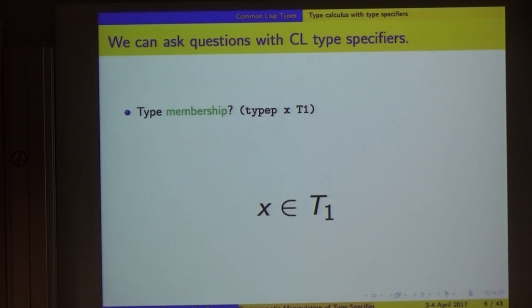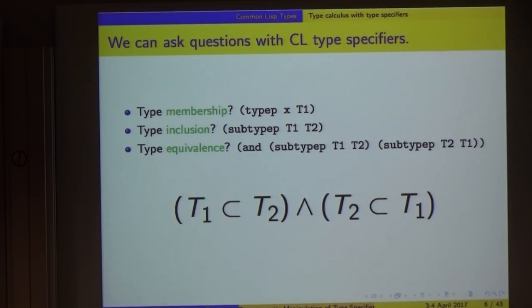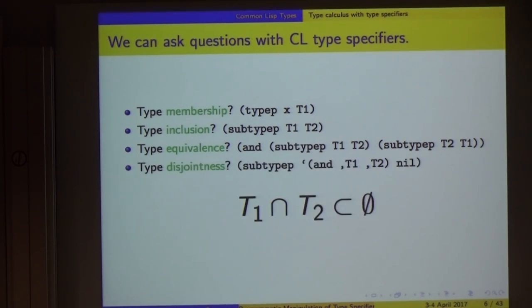There are type relationships just as there are set relationships. You can ask whether an object is a member of a type by typeP. Whether one type is totally enclosed in another type with subtypeP - is T1 a subtype of T2? Type equivalence: given two types T1 and T2, is T1 a subtype of T2 and T2 a subtype of T1? Then the types are equivalent, just as a standard set equivalence test. You can ask whether two types are disjoint by calculating the intersection and asking if the intersection is a subtype of nil. This is a standard trick for finding out whether two types are disjoint.